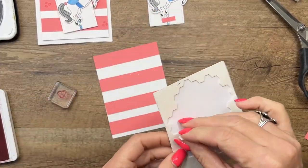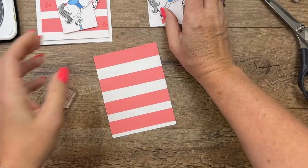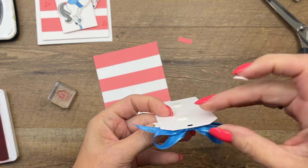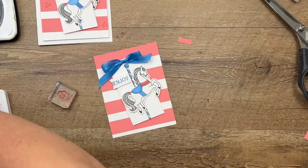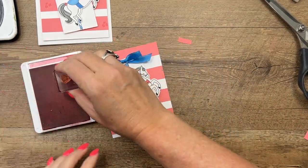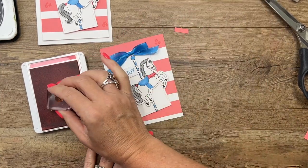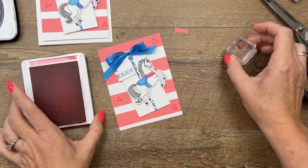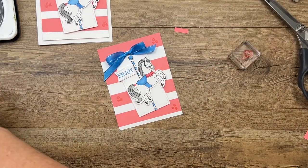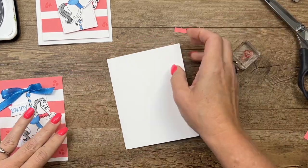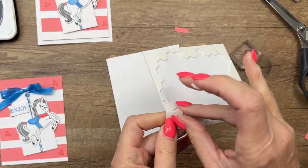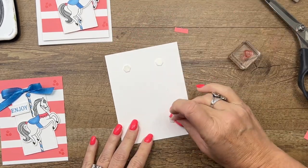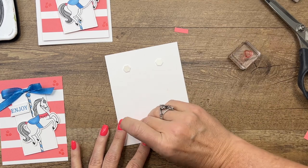I'm going to stick my tag on with some dimensionals like that. Then I'm going to get the little flowers and some Flirty Flamingo ink and stamp them three times. Last but not least, all you have to do is put it on your card base. And you know of course I'm going to use dimensionals. And there you go.